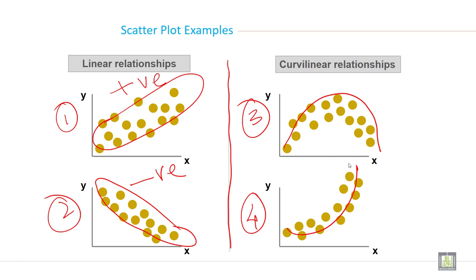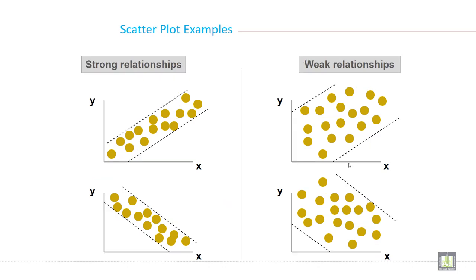On the left side is linear relationship and on the right side is curvilinear relationship. For a strong relationship, the dots are close to the line — just near up and down. For a weak correlation, the dots are far up and far down, with much distance from the line in both cases. So we have positive weak, negative weak, positive strong, and negative strong relationships.